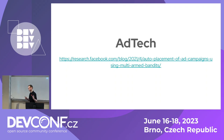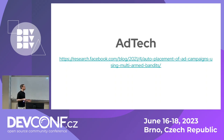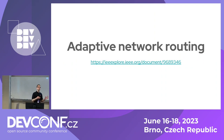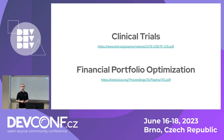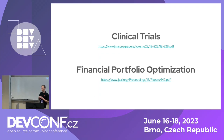These examples are on the front end, on the UI, but the same approach can be used on the back end as well — for example, network routing, clinical trials, and financial portfolio optimization. Same approach. So, how does it work?